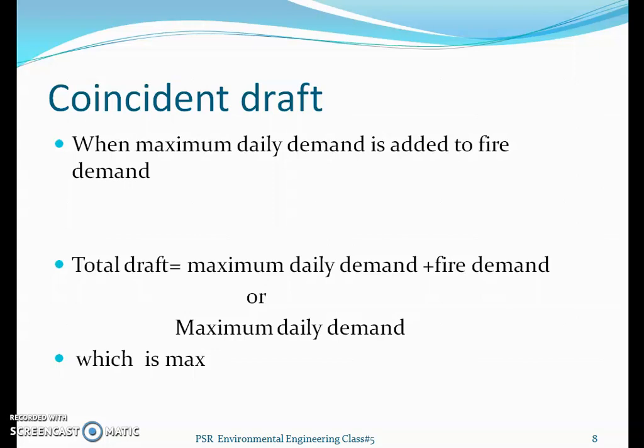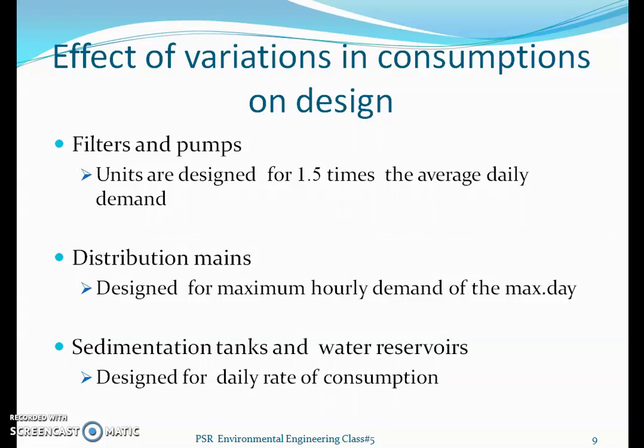We have seen what fluctuations are, how they occur, and how to calculate them. When there is variation in consumption, it affects the design of the water supply system. The water supply system includes pipes, pumps, and other components, each having its own lifetime and capacity. Let us see the effects of variations in consumption on design.